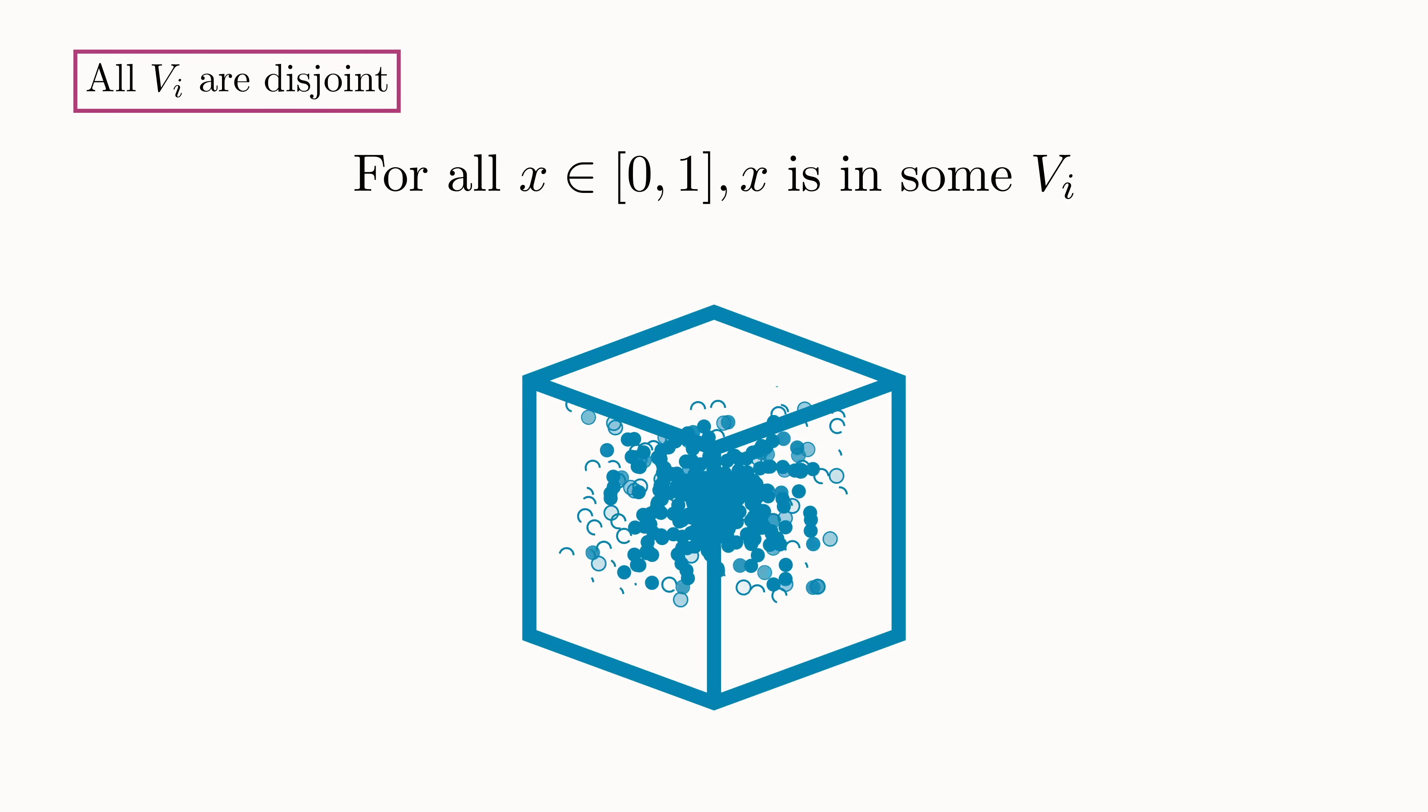Consequently, X minus any other number in this box must be rational. So let's pick one other number in the box and call it X bar. Then X minus X bar is rational. Moreover, each of these is also in between zero and one. So X minus X bar must be between minus one and one. Therefore, X minus X bar must be one of the rationals we enumerated in our list. And X just equals X bar plus QJ, which means that X must be in VJ. That is the shifted copy of V given by V plus QJ.